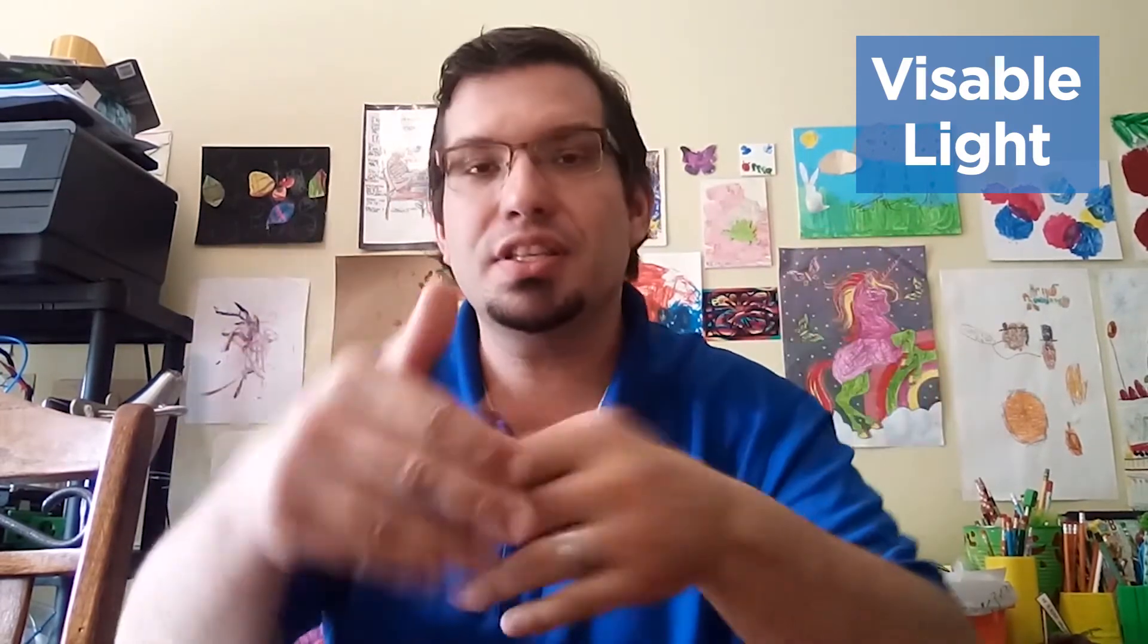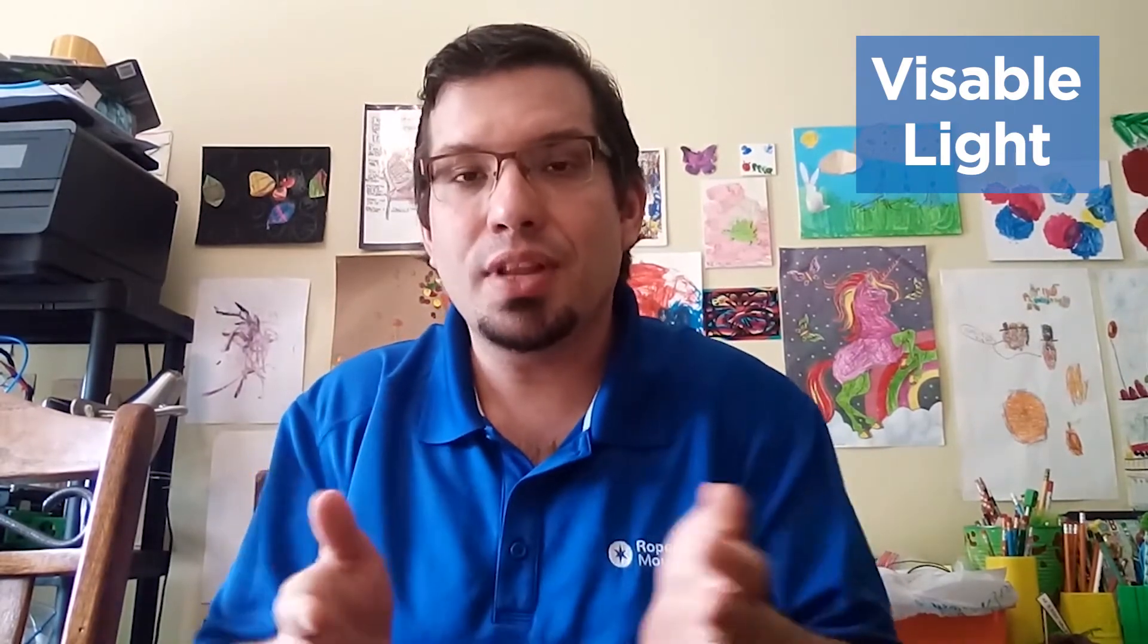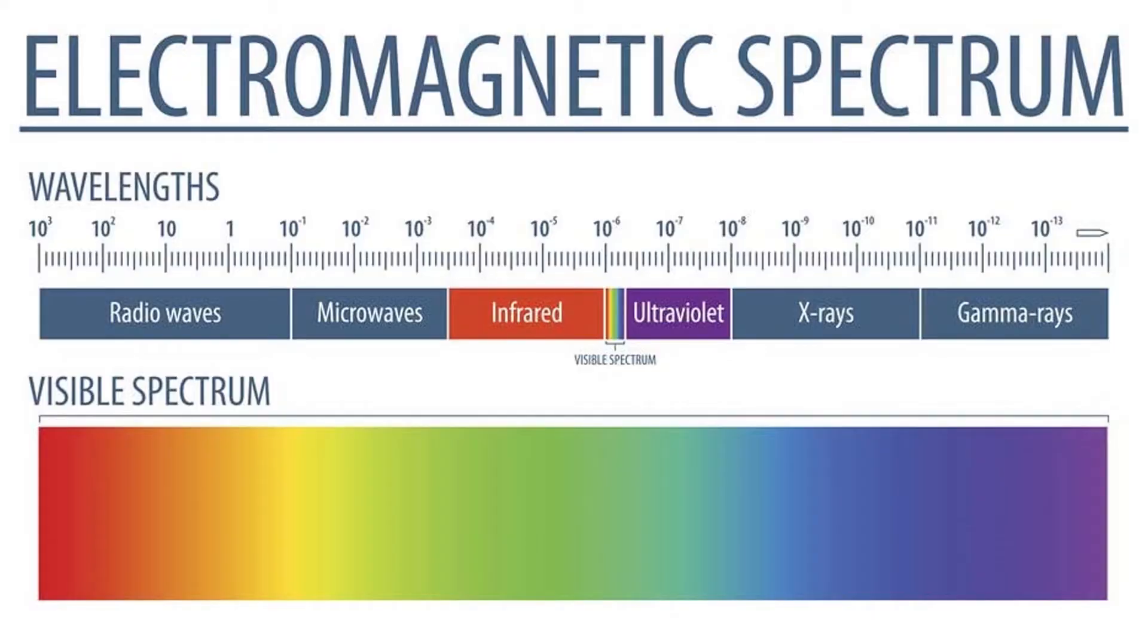It's a spectrum, they all have different wavelengths. And right in the middle is visible light. So everything we can see, all the colors you can see, the fact you can see the screen right here, you can see me right now. That is because it's visible light. It's that middle bit of the electromagnetic spectrum.